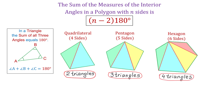Now let's look at the interior angles in any of these polygons — for example, the pentagon. This angle is the sum of these three angles that belong to these triangles. This angle is also an angle of the yellow triangle. This angle is the sum of these two angles. This one is the sum of these two angles. And this angle is also an angle of the green triangle. So notice that to find the sum of the interior angles in this pentagon we have to add all the angles of these triangles.